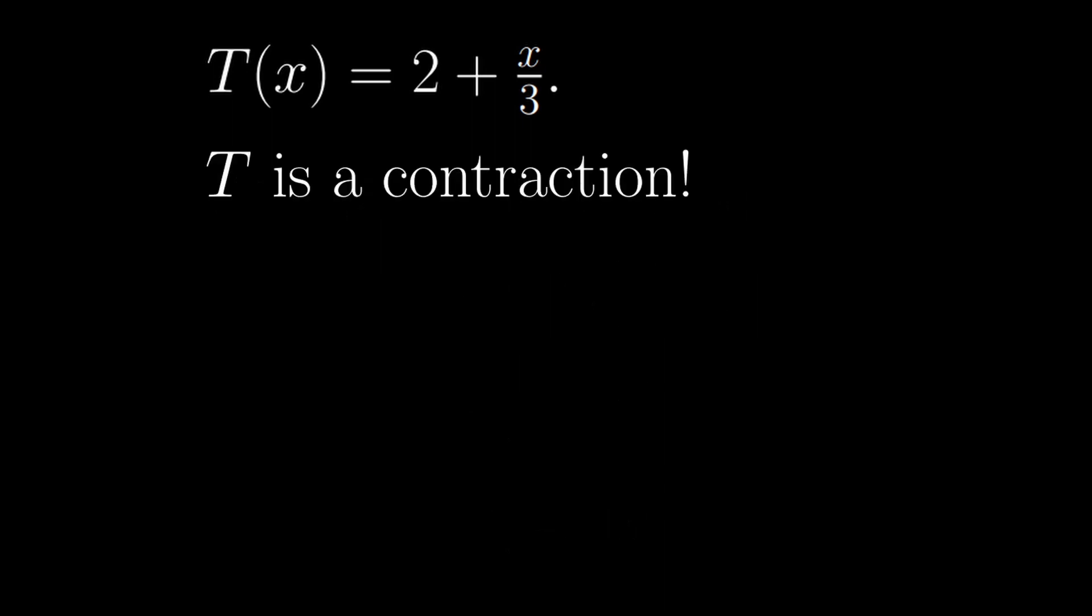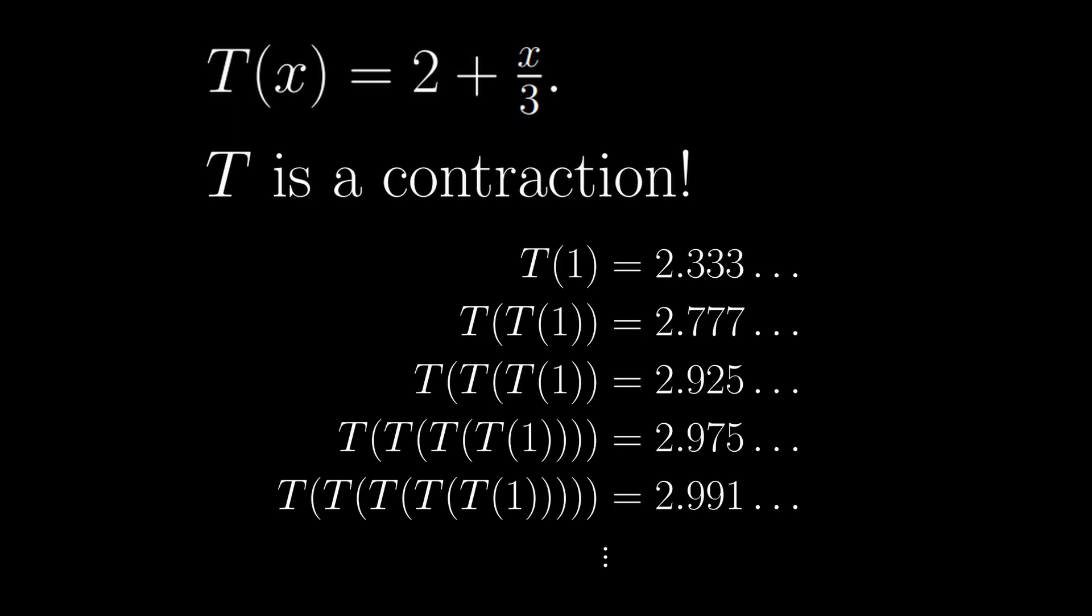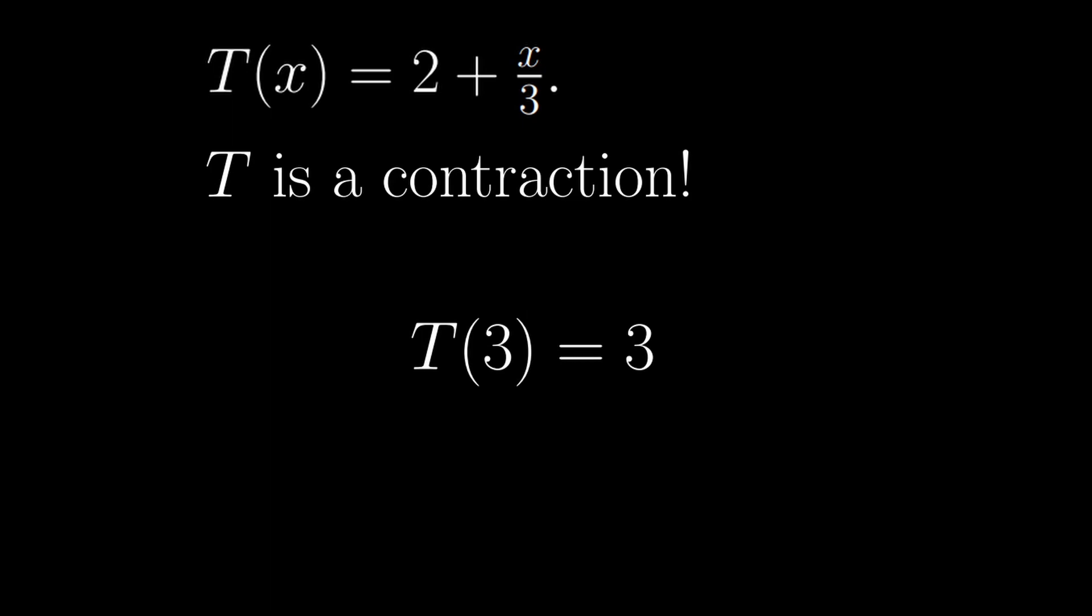What this tells us is that t is a contraction, and if we apply it to say 1 over and over again, we seem to be converging on 3. And yeah, t of 3 equals 3.